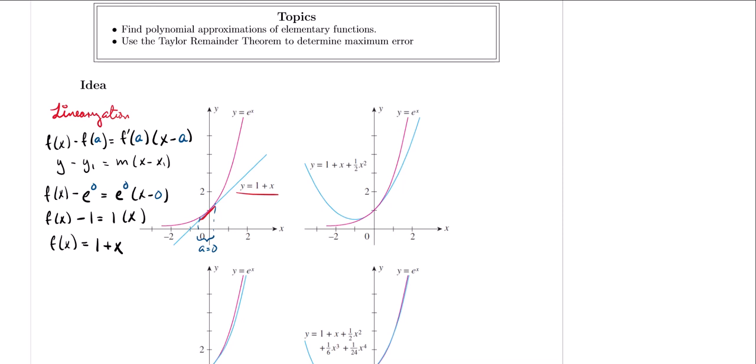This idea only works whenever we are near an a value of our choosing. If we focus at some other a value, yes, the curve behaves just like a line near that point. Nonetheless, this approach is somewhat limited because the further away we get from our chosen point a, the approximation starts to fall apart — it may seem accurate nearby, but anything past that point is not accurate at all.